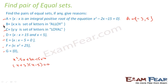Similarly, for set B, it says the letters of alloy. So we'll say B has element A, L, O, Y. Similarly for C, it's a set of letters in loyal. L, O, Y, A. L is already there, so we'll not consider it.